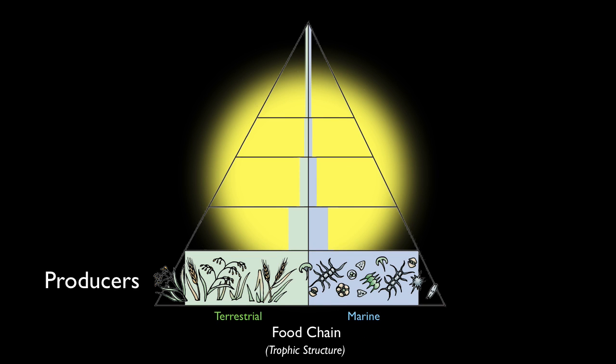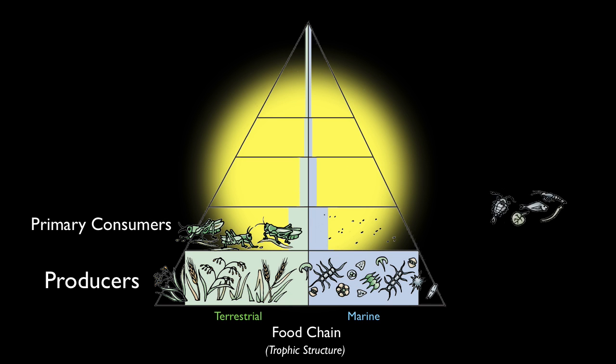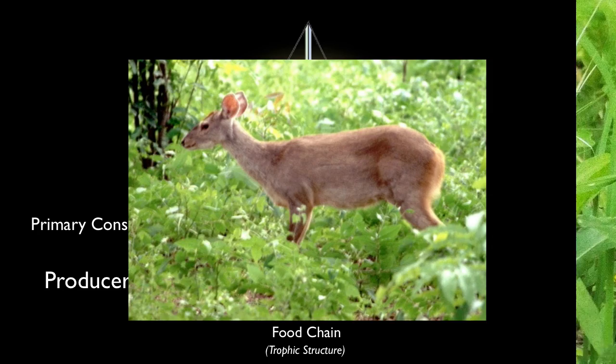Next up, we have primary consumers who eat the producers. You can probably think of many primary consumers, such as deer and rabbits.